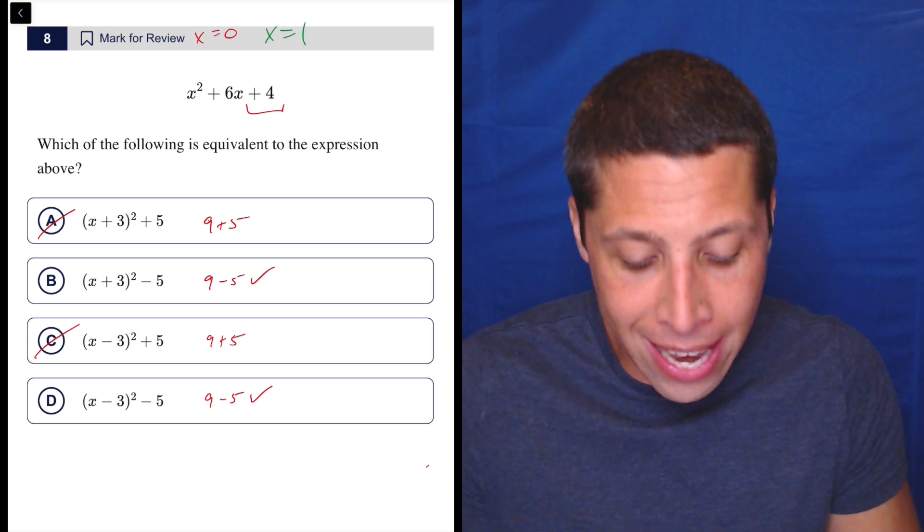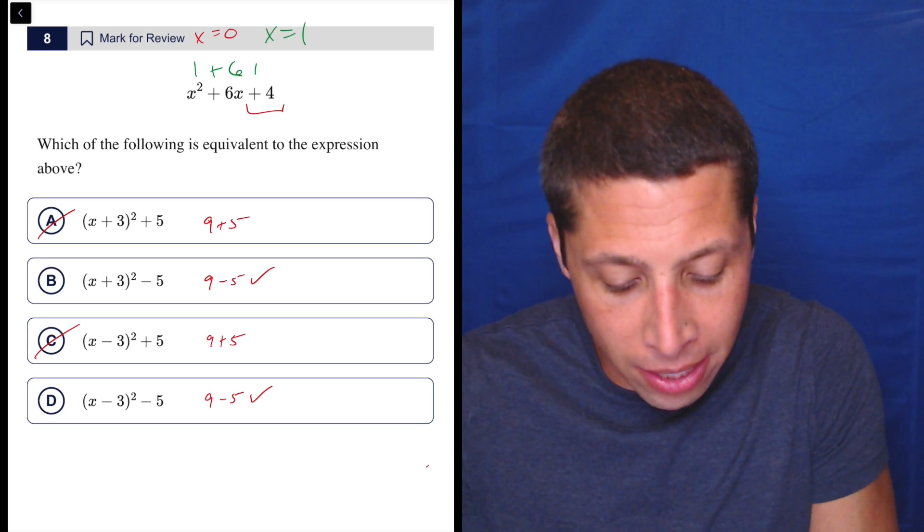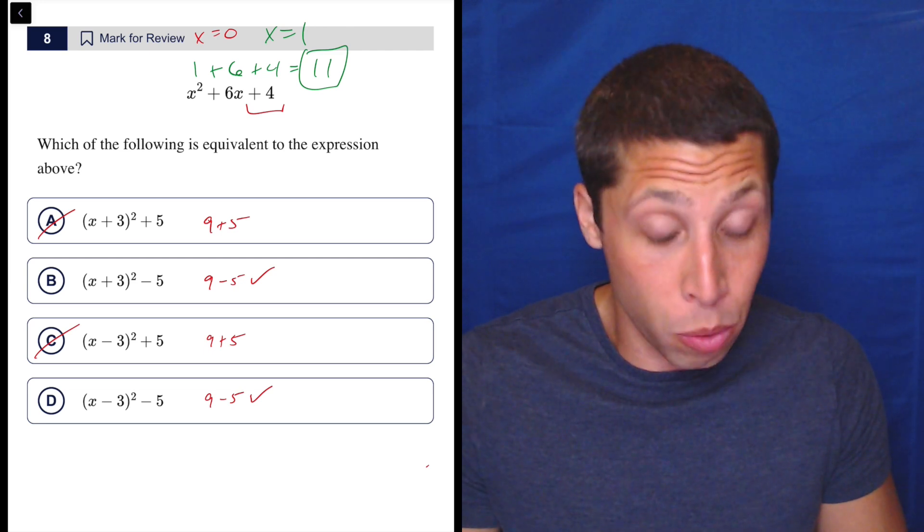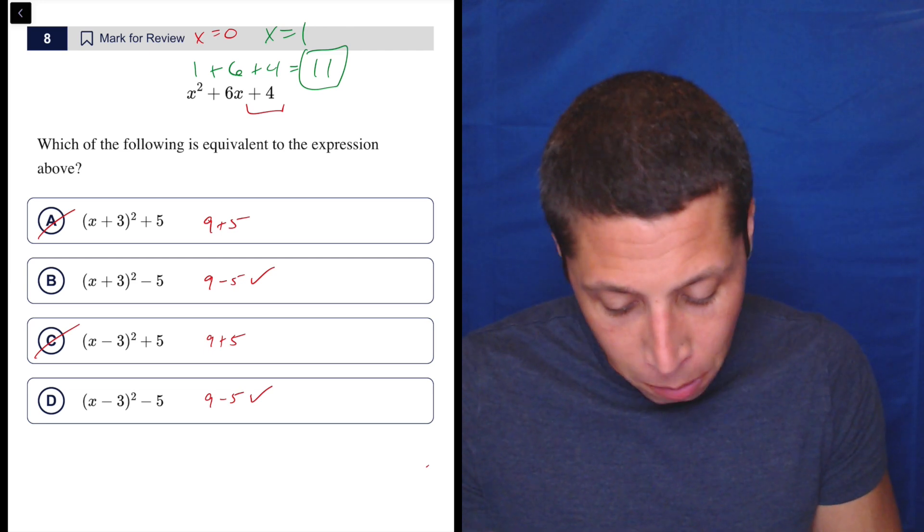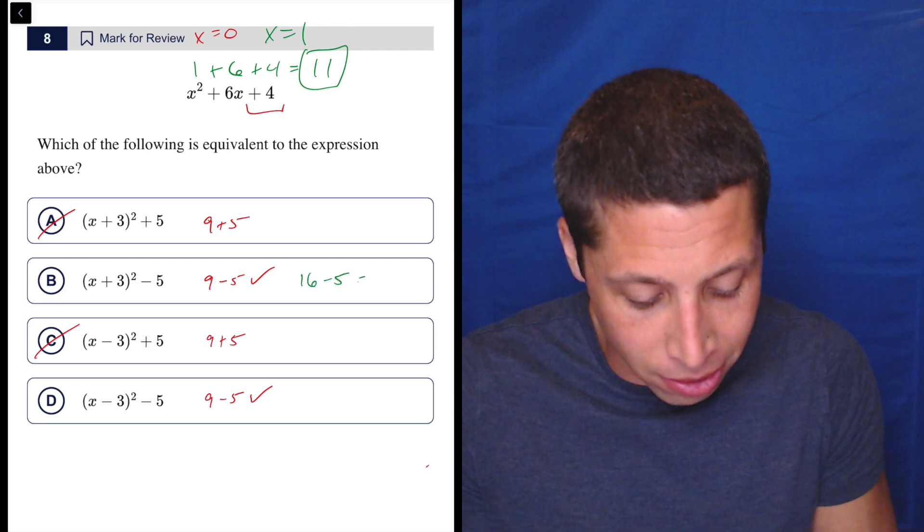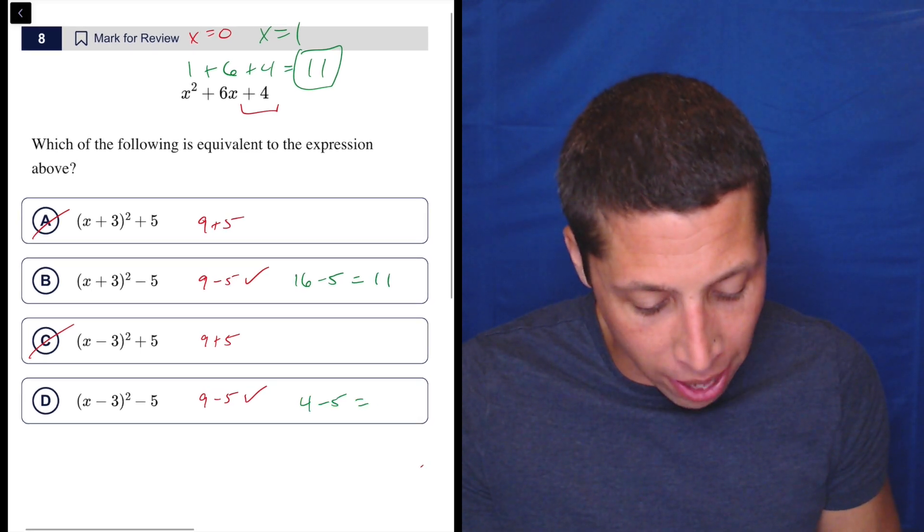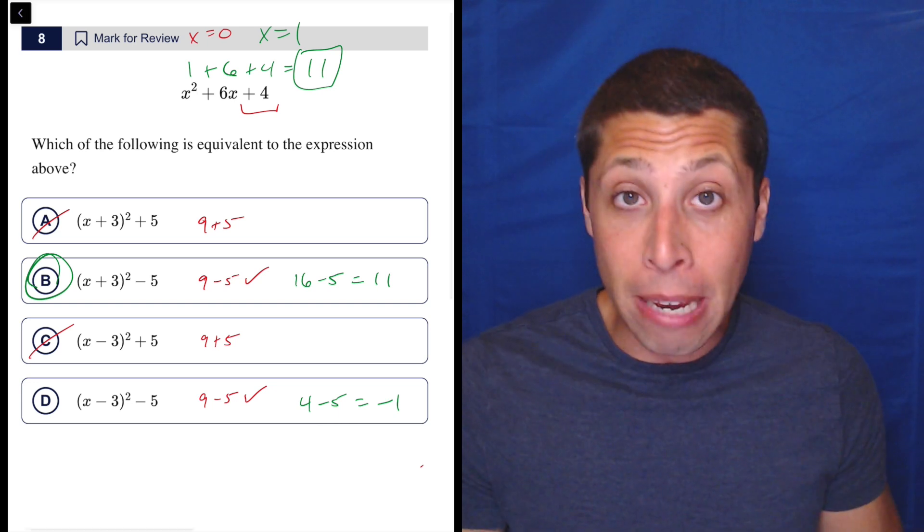Let's say x equals one. And now try that one plus six plus four. That's 11. Now, which choice of the two that are remaining gives me 11? Well, this would be four squared. That's 16 minus five. That's 11, but this would be negative two squared. So that's four minus five. That's negative one. So it is B, right?